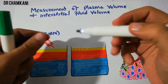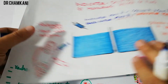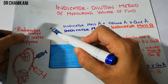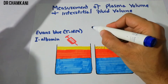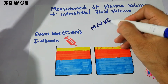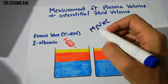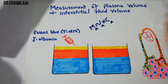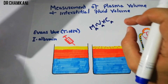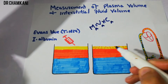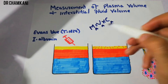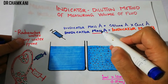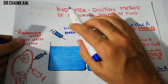Once the indicator has distributed itself into the plasma, we apply the same principle as before: the mass, volume, and concentration of the indicator are known to us. Before injection, these are labeled as mass A, volume A, and concentration A. Once injected, it distributes over a larger area in the plasma, so its concentration and volume change — but its mass remains the same, according to the law of conservation of mass.